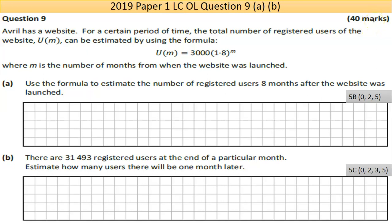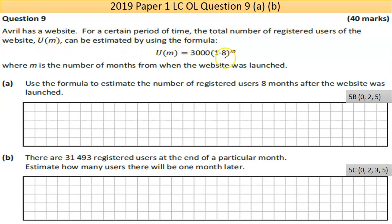Part 9 is worth about 40 marks, so it's one of the Section B questions. This first part, Part A, is worth about 5 marks, and Part B is about 5 as well. The text says Avril has a website - for a certain period of time the total number of registered users of the website, U(M), can be estimated by using the formula given here.